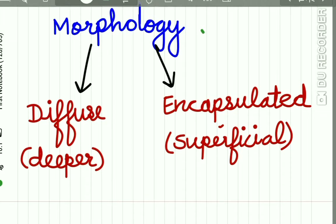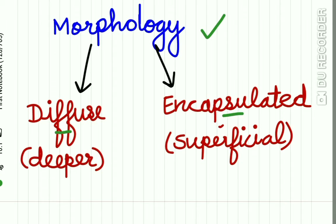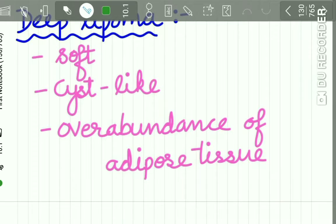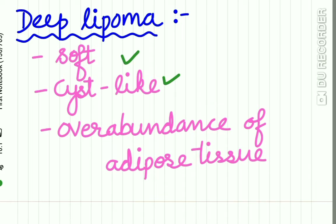Here you can see the clinical picture of lipoma on the buccal mucosa. Morphologically, lipoma is classified as diffuse type and encapsulated type. The diffuse type occurs in deeper tissues, while the encapsulated type occurs in superficial tissues. Superficial lipoma can be described as lobulated, painless, sessile or pedunculated, movable, with very thin epithelium. Deep lipomas are soft, cyst-like, and have an overabundance of adipose tissue.